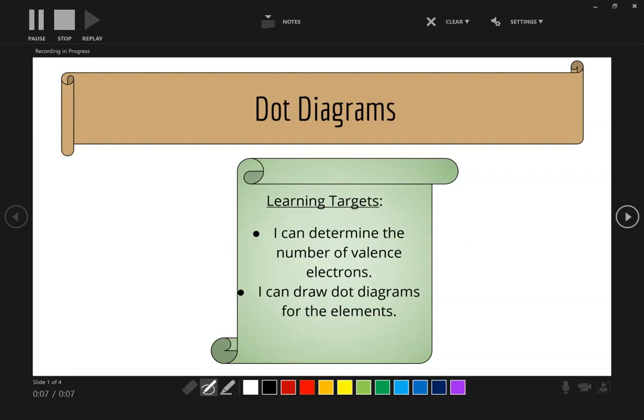This lesson is on dot diagrams. Your learning targets are: I can determine the number of valence electrons, and I can draw dot diagrams for the elements.